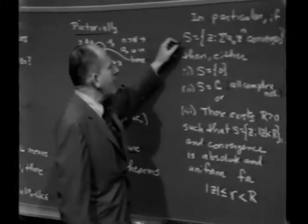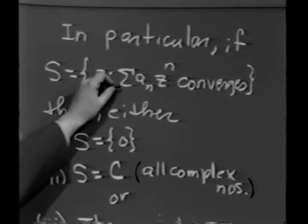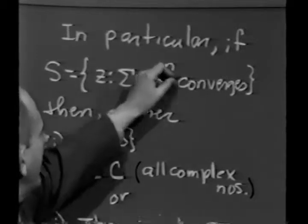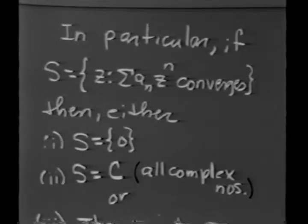If we let S denote the set of all complex numbers z for which the power series summation a_n z^n converges, then just as in the real case, one of three things must happen.